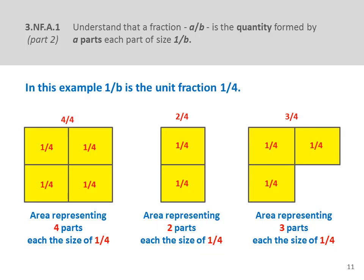Let's move on to the second sentence of the first standard. This says: understand that a fraction a/b is the quantity formed by a parts, each the size of 1/b. So we're moving from working with one part — the unit fraction — to multiple parts of b equal parts. To model this, we use the same area models. In the example shown in this slide, we modeled 1/b as the unit fraction 1/4. A over 4 could be 2/4, or 3/4, 4/4, or even more.